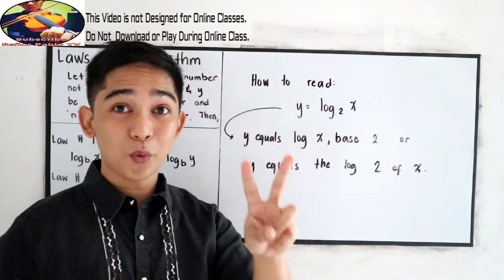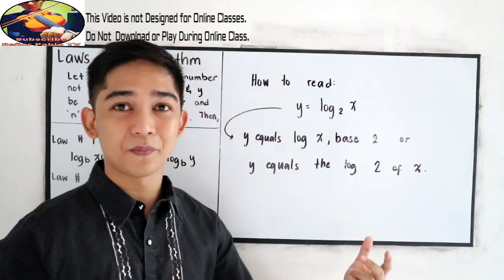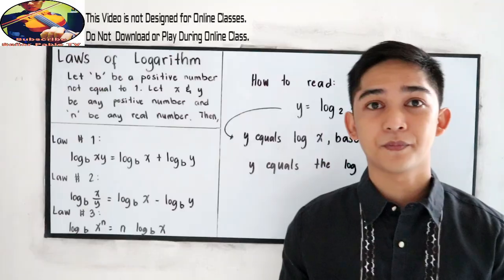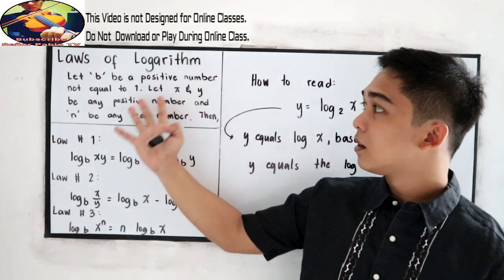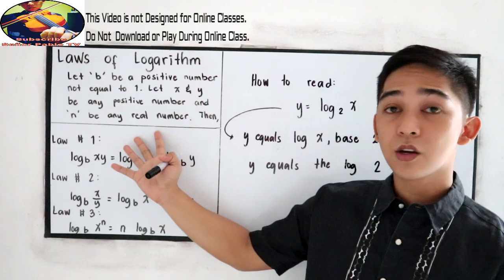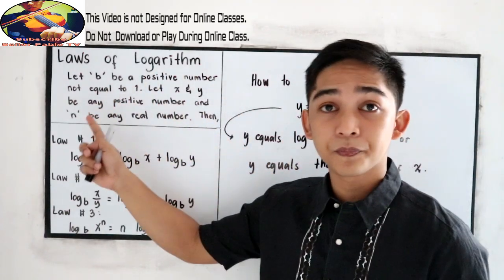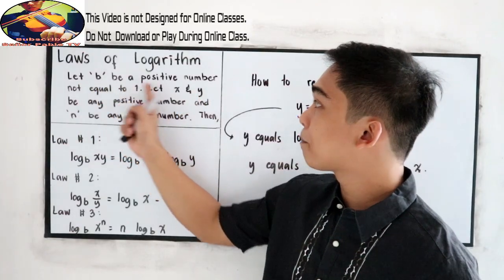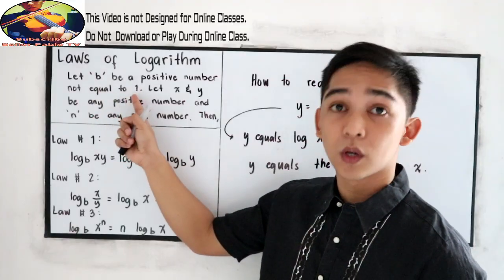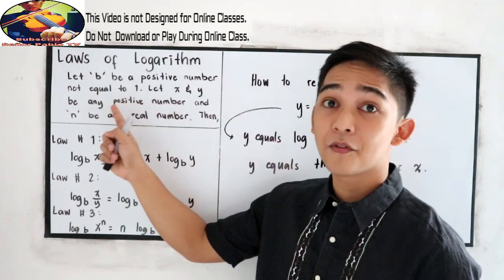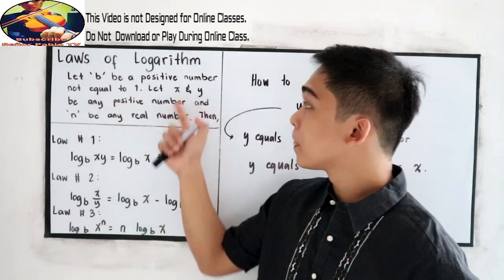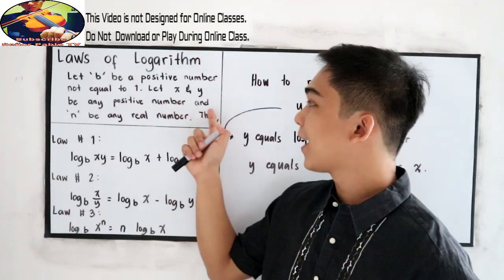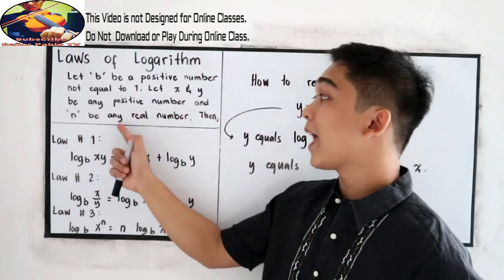Those are the two ways to read a logarithm. Now let us find out our Laws of Logarithm. The condition is: let b be a positive number not equal to 1 — so we have a restricted value of 1. Let x and y be any positive number, and n be any real number.